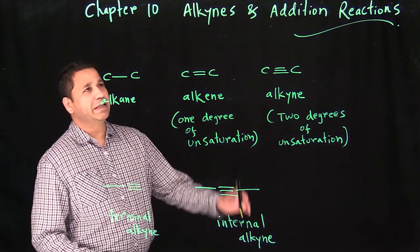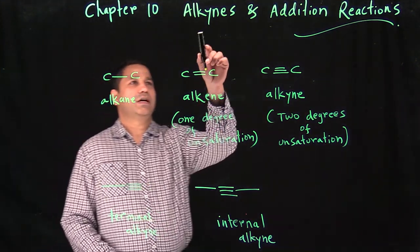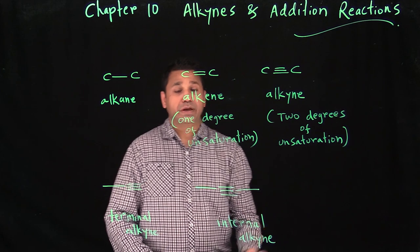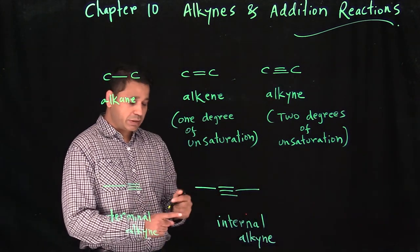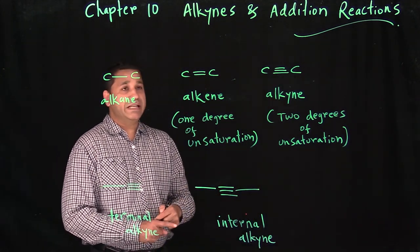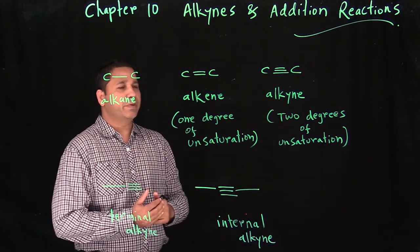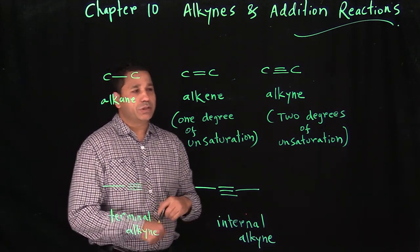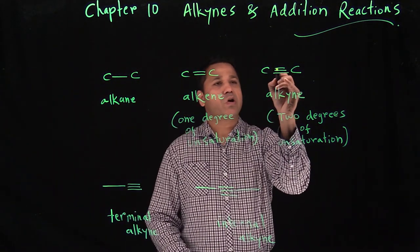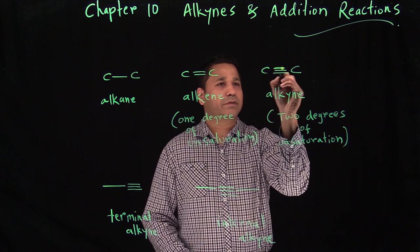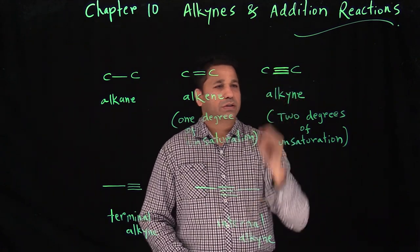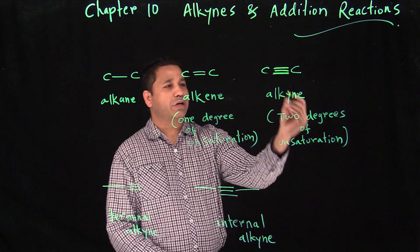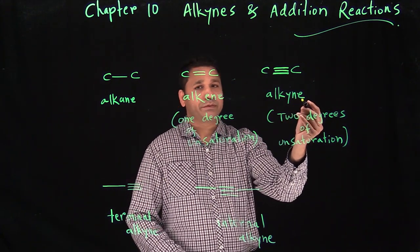Chapter 10 is alkynes and addition reactions. In the previous chapter, we talked about the reactions of alkenes, so this chapter is pretty similar. An alkyne is a carbon-carbon triple bond — three bonds between the carbons. That's your alkyne functional group.